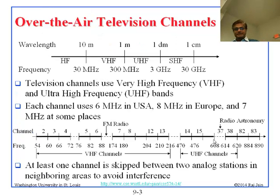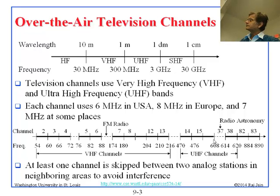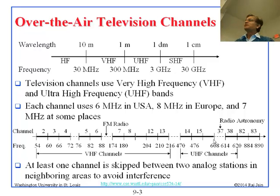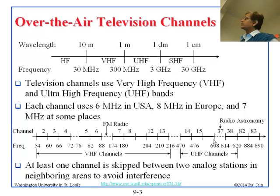First, about television channels. The spectrum is named as high frequency, very high frequency, ultra high frequency, super high frequency, and so on — they just ran out of names as they moved from below 30 MHz to 300 MHz to 3 GHz and 30 GHz. VHF is what you would call the meter band because wavelengths are in single digit meters, 1 to 10 meters. UHF would be the decimeter band.